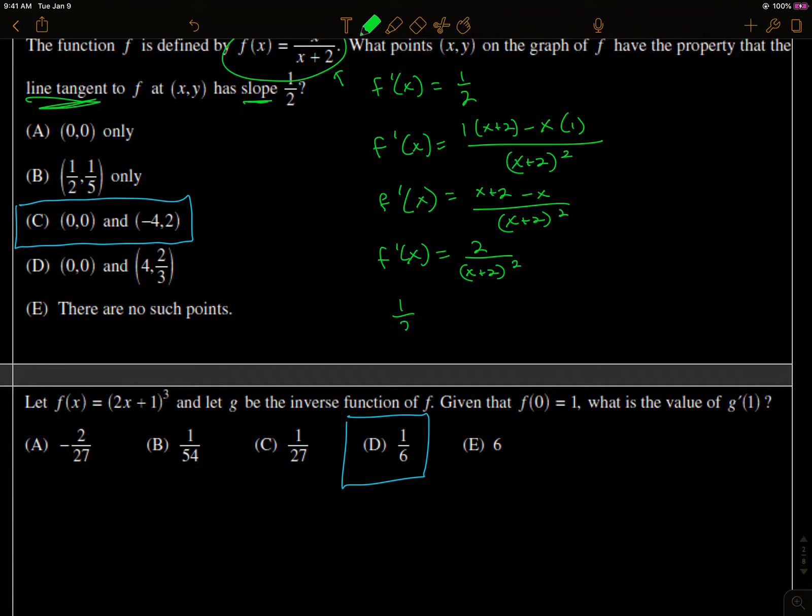So now I want to set that equal to 1 half. Find at what x values the slope has a tangent line of 1 half. So I'm going to cross multiply here and get x plus 2 squared equals 4.